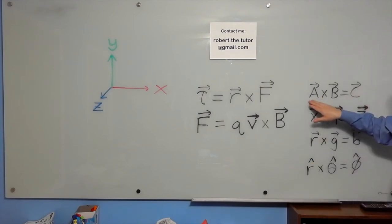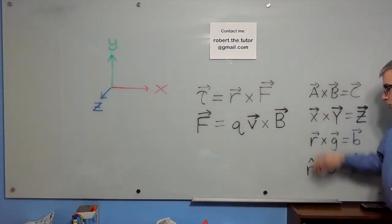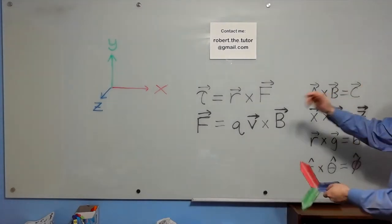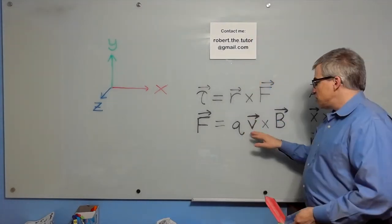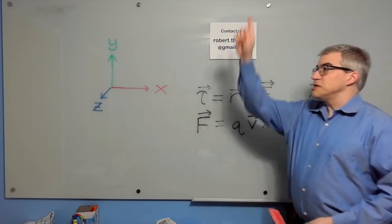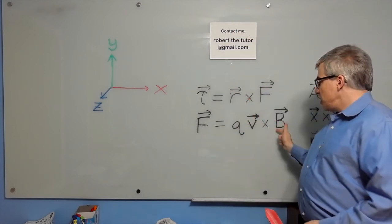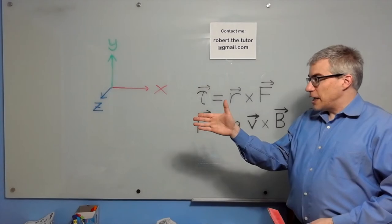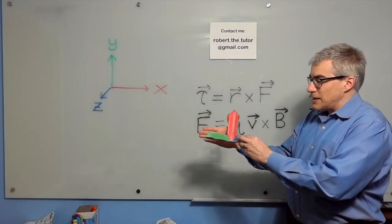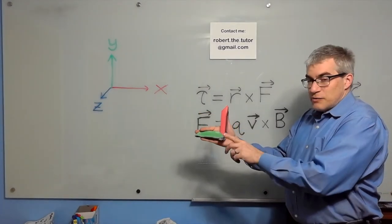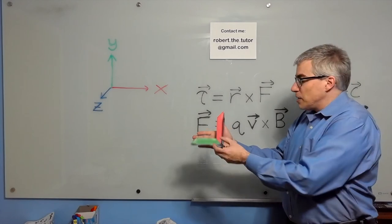When you have three vectors, a cross b equals c. In that order, it's like red, green, blue. Whichever way the first vector's pointing, suppose I'm doing v cross b, and v is this way, that'll be my thumb. And b, the magnetic field, is that way. If the first vector is red and the second is green, the third vector is blue, sticking out. It's that way.